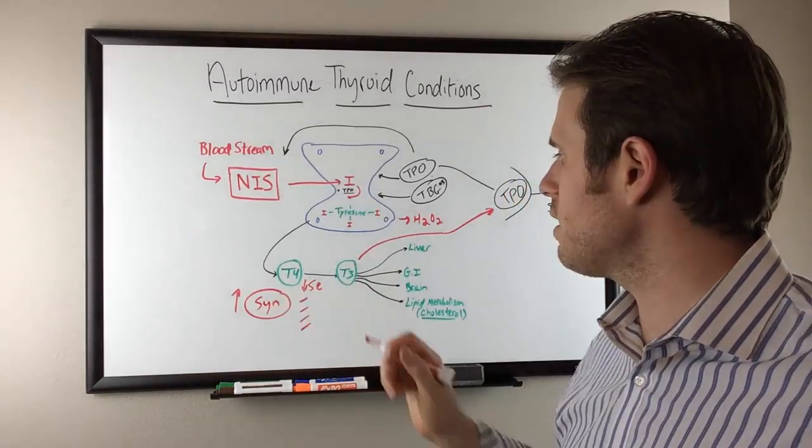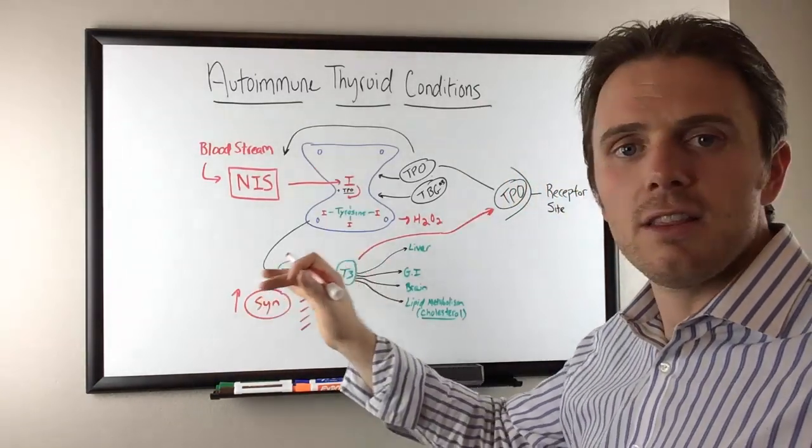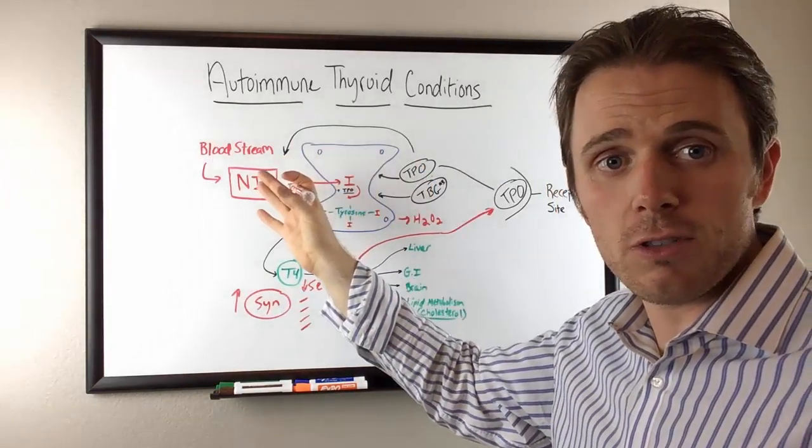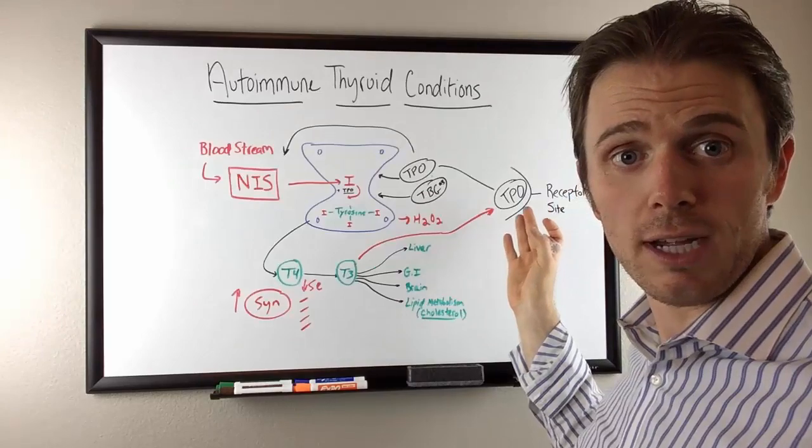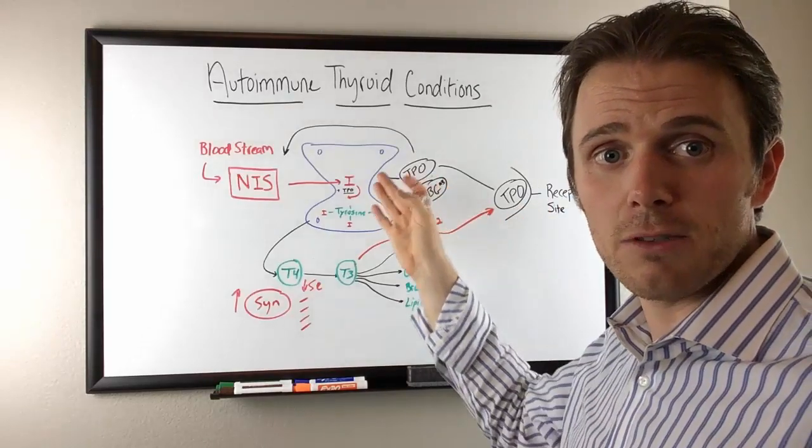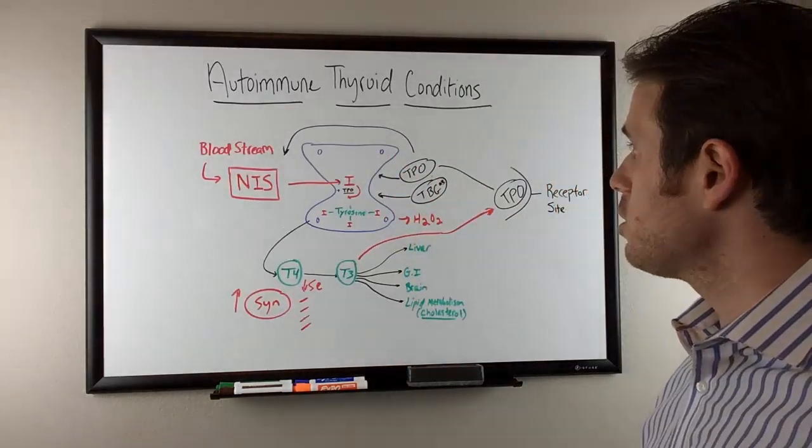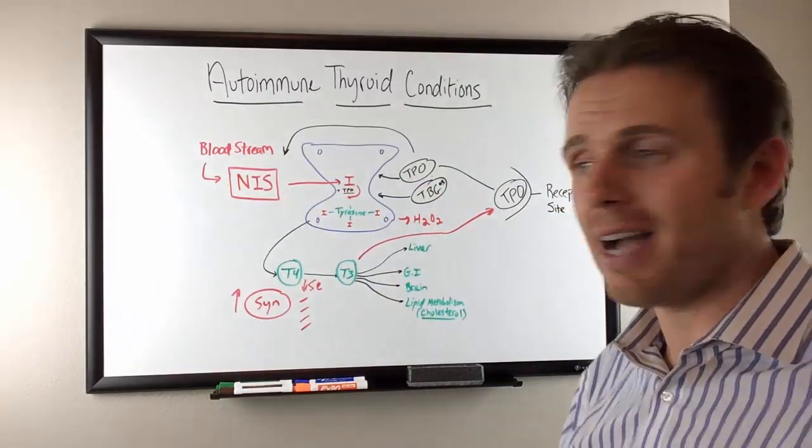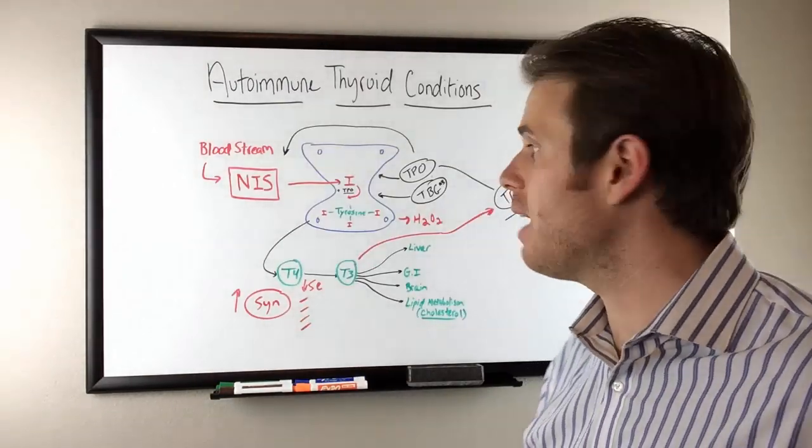You can see just by giving a little bit of Synthroid over here doesn't fix all the damage that's happening at the sodium iodine symporter system. It doesn't affect the receptor sites, and it doesn't affect the damage that's happening to the thyroid tissue. I hope this gives you a good idea of what's happening when we have an autoimmune attack and why just giving Synthroid isn't enough.